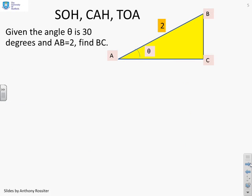OK, next question then. Given the angle theta here shown is 30 degrees, so we're told that that's 30 degrees, and given that AB equals 2, and you'll see, so the hypotenuse is 2, find BC.